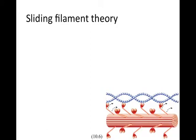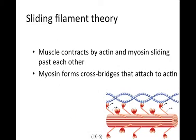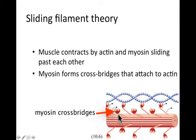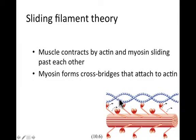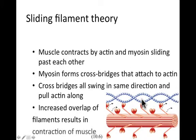The simplest way to describe how a muscle fiber contracts is by using the sliding filament theory — the muscle contracts by actin and myosin sliding past one another. The myosin forms cross bridges that attach to the actin. These cross bridge heads are attracted to the actin molecule, represented by the long blue filament shown here. As the cross bridge attaches to the actin, it swivels and pulls the actin over the myosin molecule, increasing the overlap of the filaments and resulting in contraction of the muscle.